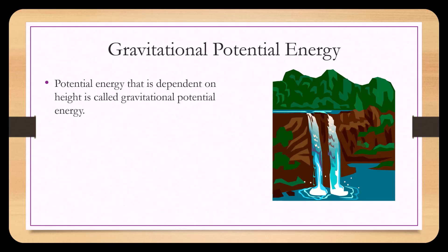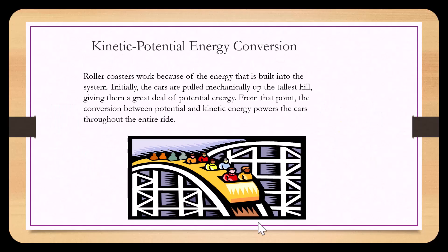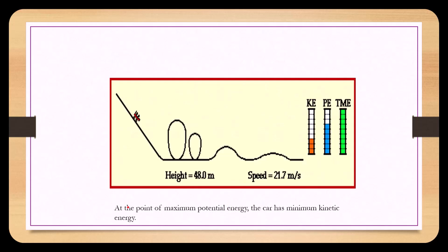Potential energy that is dependent on height is called gravitational potential energy. Energy that is stored due to being stretched or compressed is called elastic potential energy. Roller coasters work because of the energy built into the system. Initially the car is pulled mechanically up the tall hill, giving it a great deal of potential energy. From that point, the conversion between potential and kinetic energy powers the car through the entire ride. When the cart is at the top of the roller coaster it has the most potential energy, and at the bottom it has the most kinetic energy. As it goes down the hill, potential energy decreases and kinetic energy increases; as it goes up, potential energy increases and kinetic energy decreases.